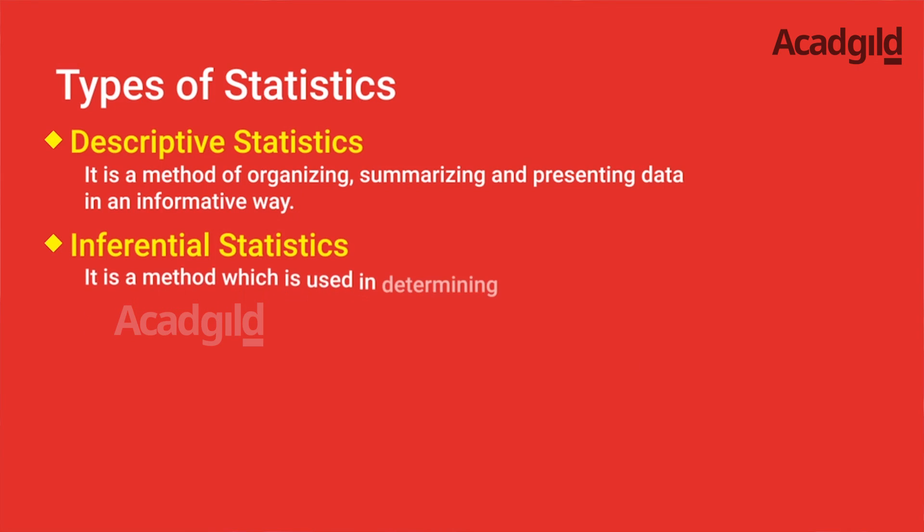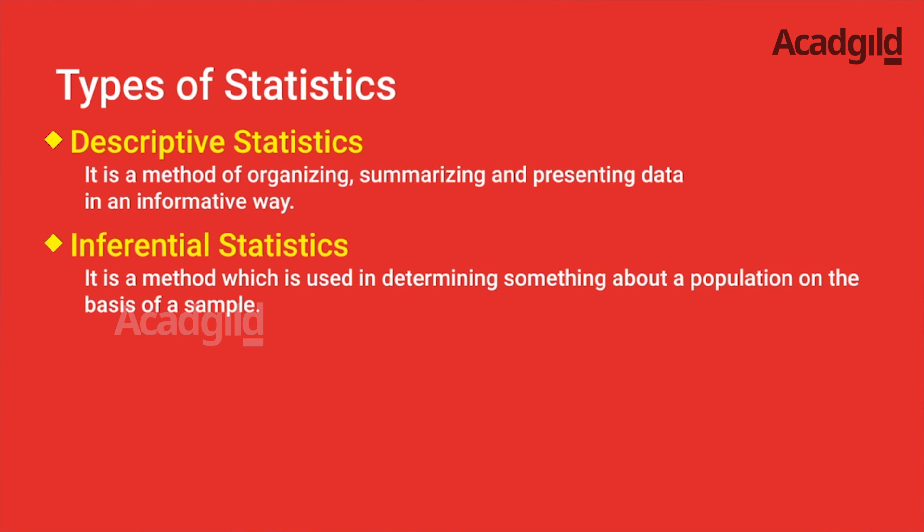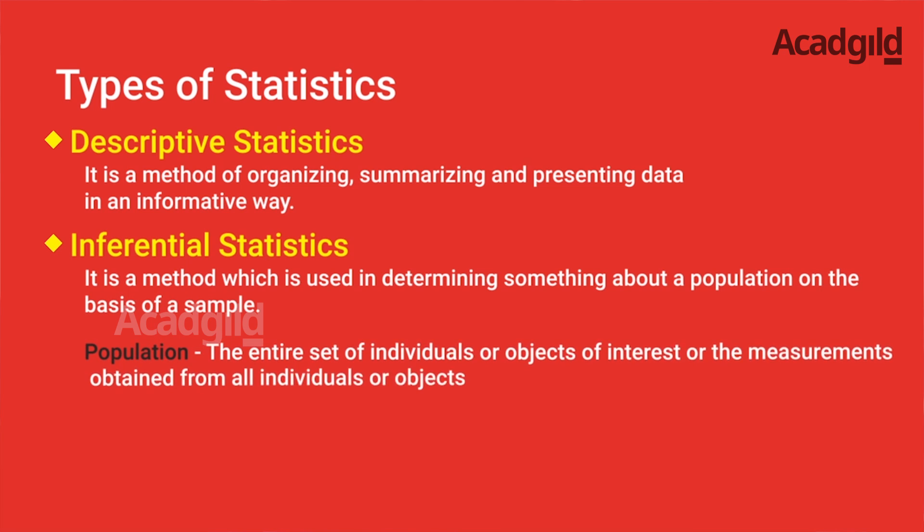As opposed to inferential statistics, which is a different kind of statistics altogether. Recently we had an election in a state. Now you are not going to ask every person whether they voted for one party or the other, but you want to figure out. So you select a sample, you decide the sample size, and based on that sample size you try to infer which party is going to get more votes. You try to infer whether a person is lying or telling the truth. So that becomes inferential statistics. The population in that case would be all the individuals of, say, Gujarat, where people voted. And the sample would be those people to whom you went and asked: are you going to vote for party A or are you going to vote for party B?